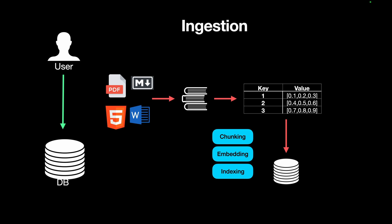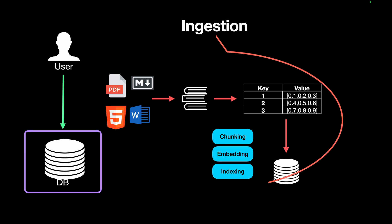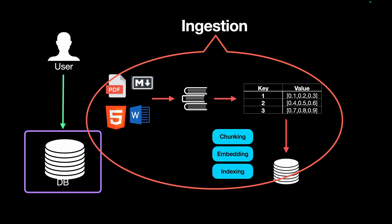Whenever a user asks a question it hits the vector database, but how is this vector DB built? The steps involved in processing the data and building the vector DB is called ingestion. The steps involved are chunking, embedding, and indexing. In this video let's do a deep dive into chunking, which is the first step in ingestion, and in following videos we'll look at embedding, indexing, and other parts of RAG.